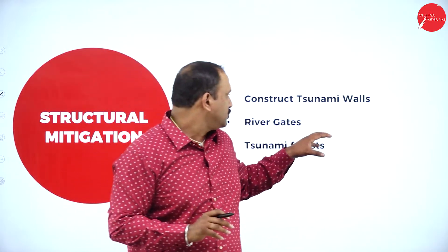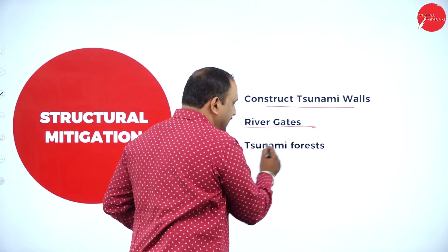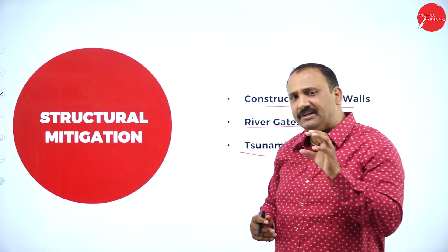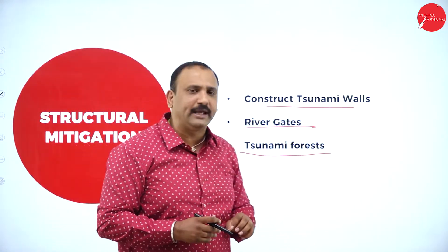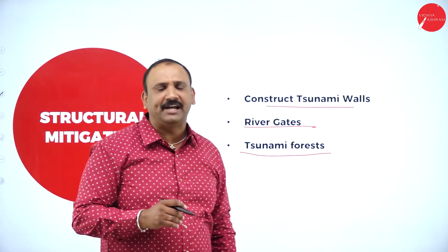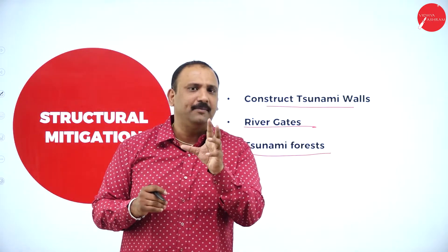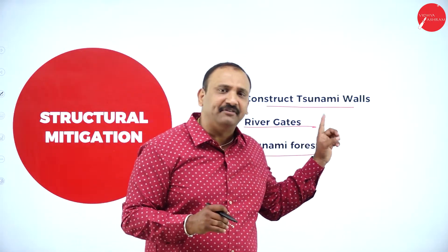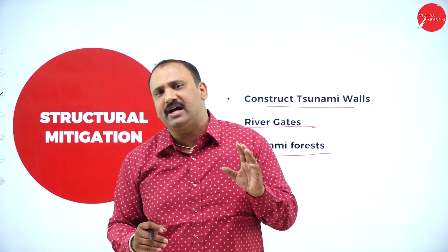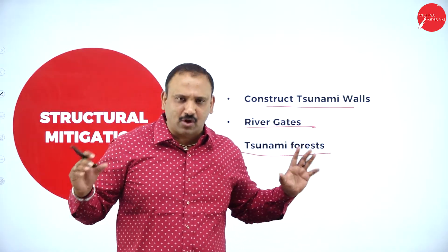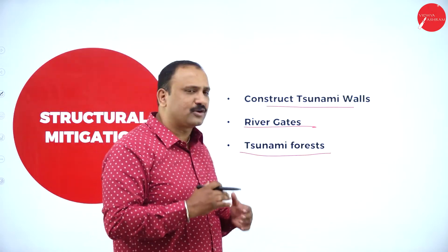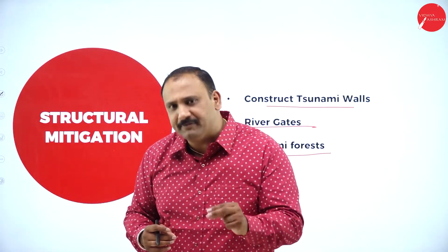Structural mitigation would also include the construction of tsunami walls, river gates, and tsunami forests. In Asian countries that experienced tsunami, they understood that one way to prevent tsunami damage is to start building high-rise walls that could stand as a barricade against giant waves entering the city. These walls are of really great height — about 100 to 200 feet tall — strong enough to stand as a fortress in front of the city and block the water from coming inside. Construction of tsunami walls was considered one of the preventive measures through which you can stop those giant waves from harming you.